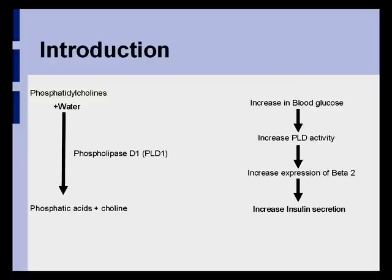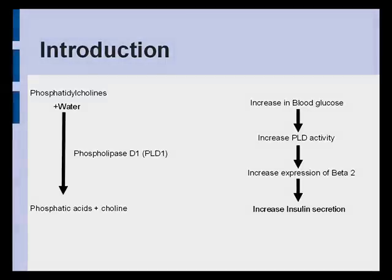Phospholipase D1 is an enzyme which converts phosphatidylcholines into phosphatidic acids and choline. This enzyme does this by a process known as hydrolysis, where water is added to a substance in order to break it up into two separated molecules. This investigation found that an increase in blood glucose level increases the activity of PLD1, which in turn increases insulin secretion by activating beta-2, a regulator of insulin exocytosis, and is also required for the regulation of insulin gene expression.